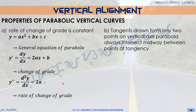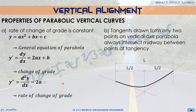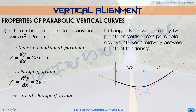The next property is that a tangent drawn from any two points on the vertical axis of the parabola will always intersect midway between the points of tangency. So if we have tangents on the parabola at any points, the intersection of those tangents will always be measured at L over 2 — midway of our parabola.